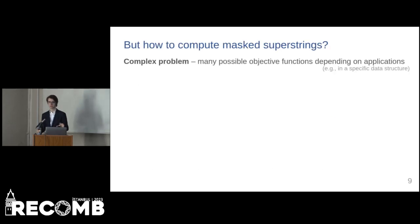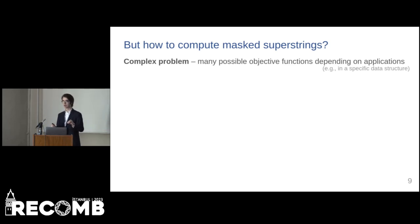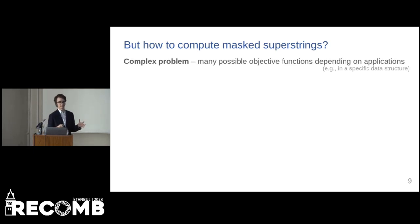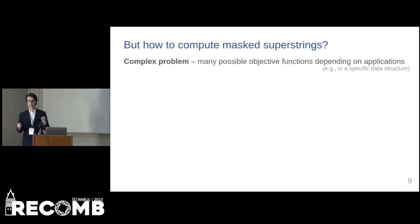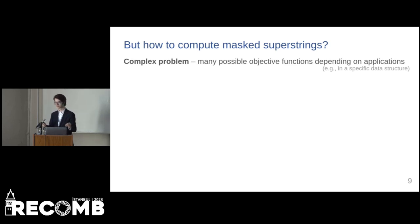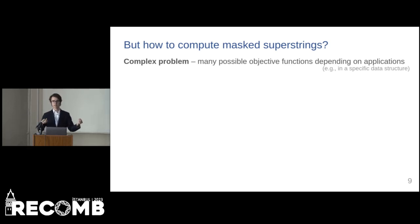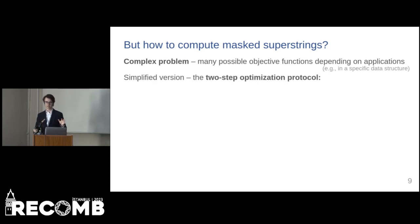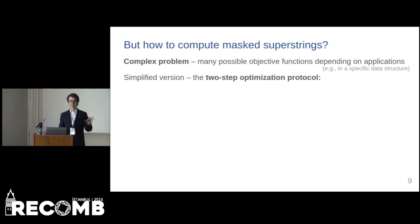This generalization makes the problem of computing optimal masked superstrings a very difficult one. We might have different objectives and different objective functions for masked superstrings depending on the needs of specific data structures and downstream applications. These would usually want to optimize both the superstring and the mask, but these two naturally go against each other. Thus, we propose a simplified two-step protocol.